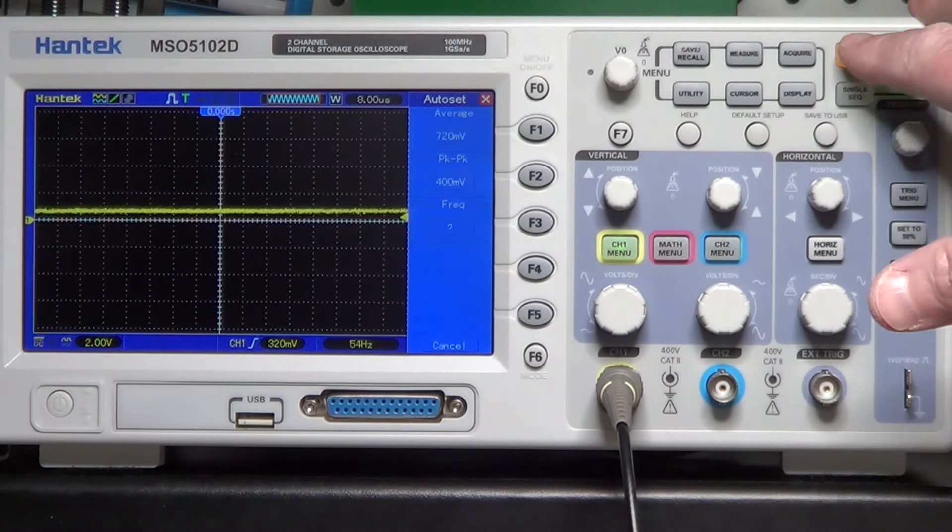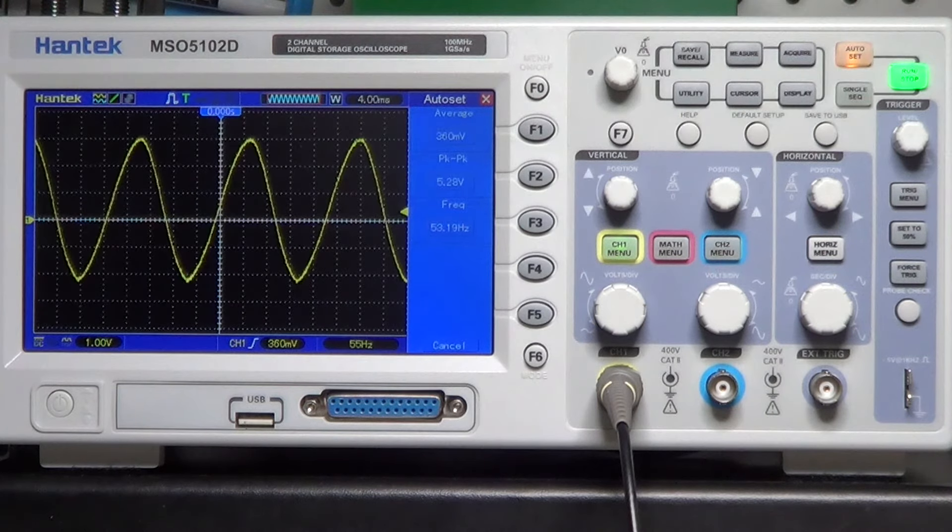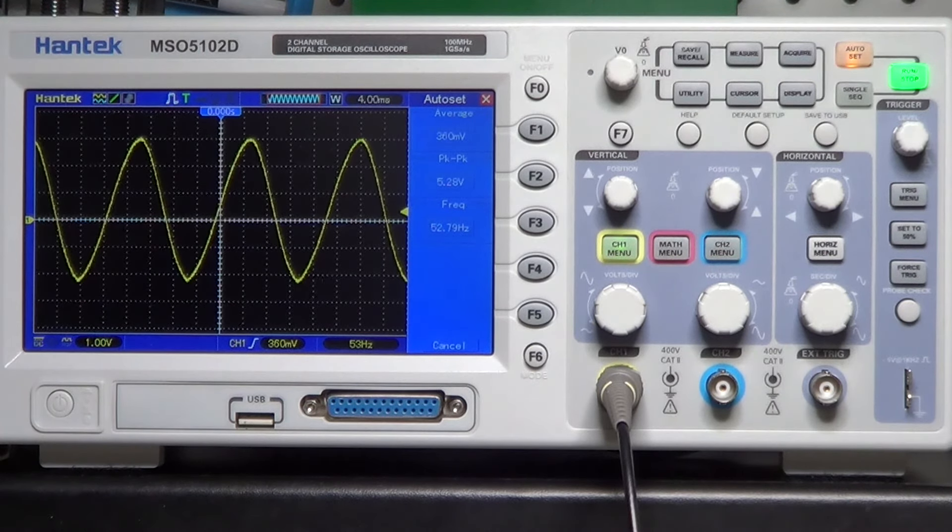Let's adjust the oscilloscope scale. And here is our nice sine wave, currently oscillating at about 53 Hz.